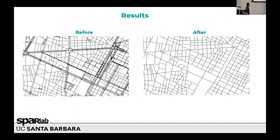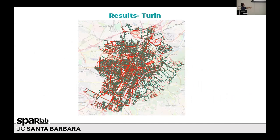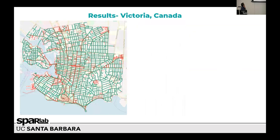Let's just look at the final result. This is the data we got from OpenStreetMap without doing any processing, and here we can see the result after the process I just described. It's not perfect, but it's much better than the beginning. The network can absolutely be used to start calculating a walkability index. I also tried this on Victoria, Canada, because we work a lot with data from there.